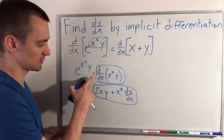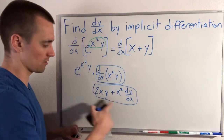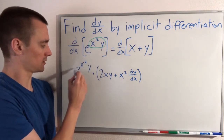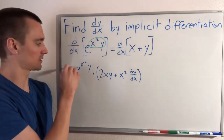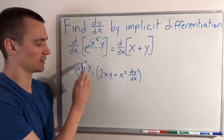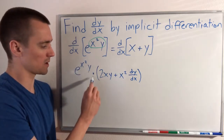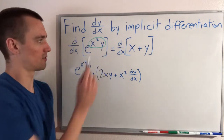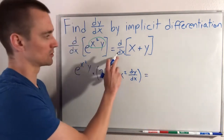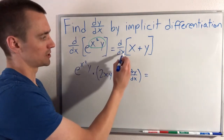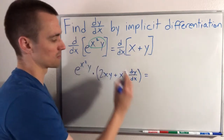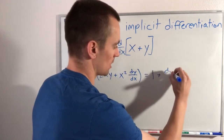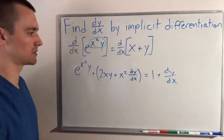So let's replace d/dx of x squared y with all of this. By chain rule, the derivative of the outside gave us e to the x squared y — it didn't change anything — and we multiply the whole thing by the derivative of our inside, x squared y, which by product rule is 2xy plus x squared dy/dx. This equals the derivative of the right side: the derivative of x with respect to x is 1, and the derivative of y with respect to x is dy/dx, so our right side is 1 plus dy/dx.